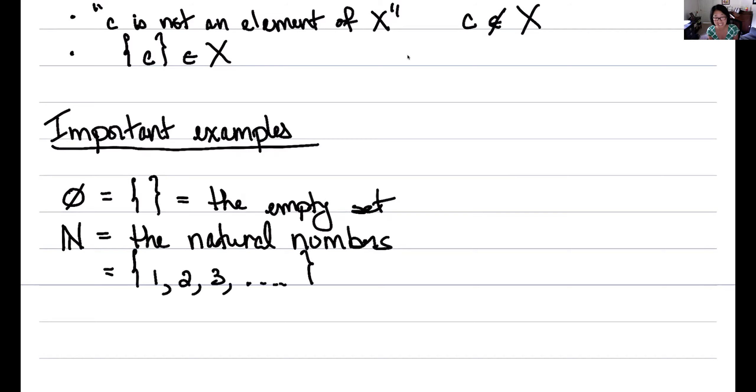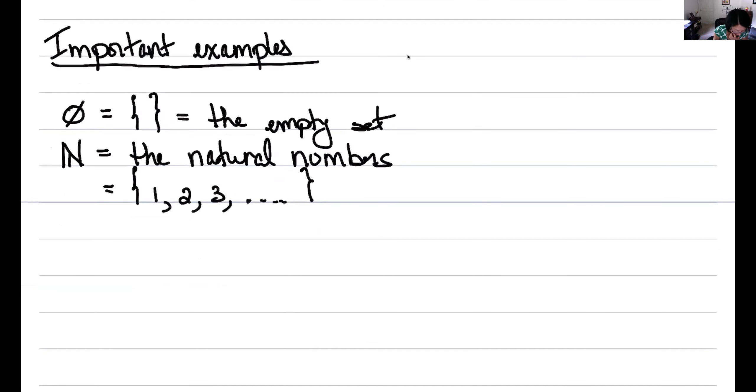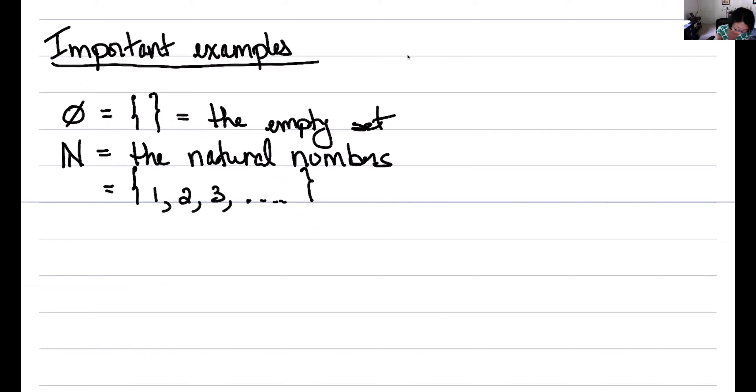And I know that computer scientists like to start counting, like start indexing things by zero. And so sometimes then it's convenient to say the natural numbers start at zero. It's a choice. You just have to ask people what they're doing. Do your natural numbers start at zero or they start at one?